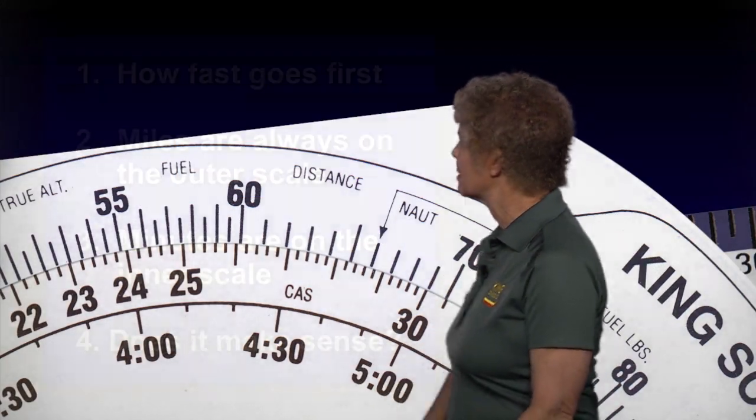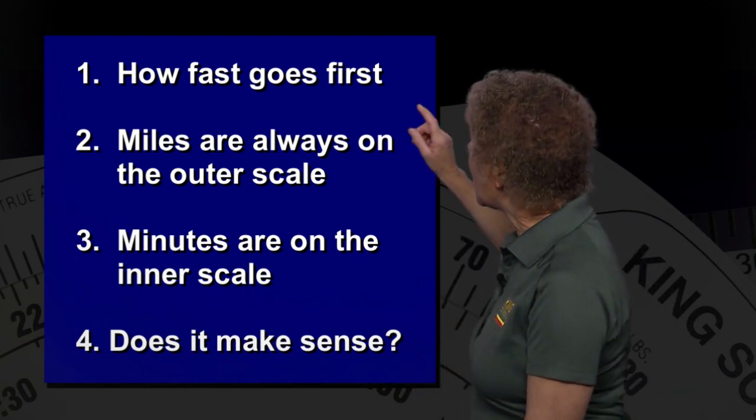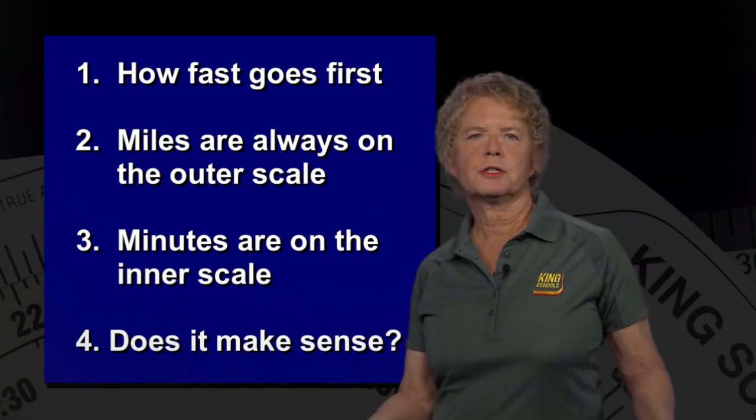Now there are four basic rules that you need to remember as far as using the flight computer are concerned. And the first rule is how fast always goes first.